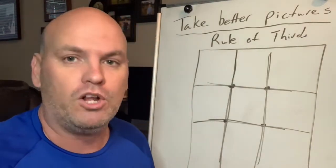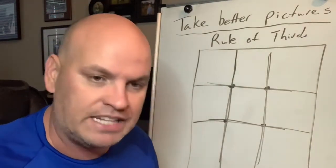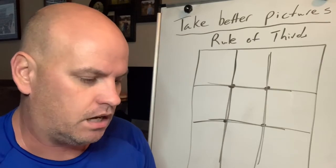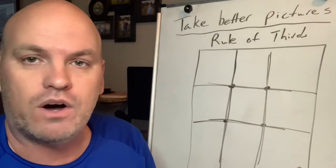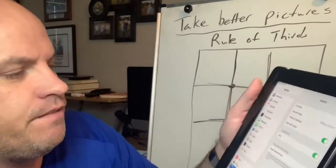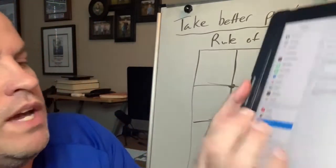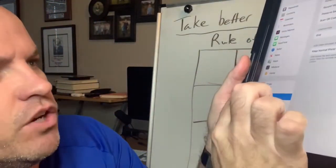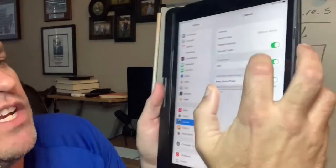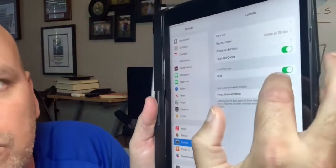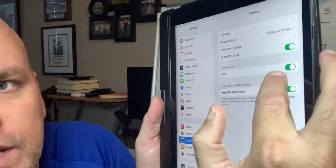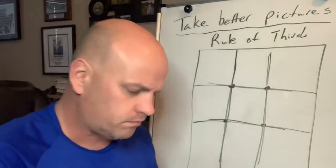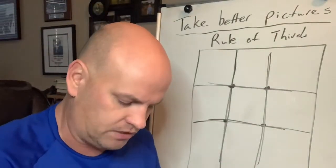Remember, pull up those grid lines. On an iPhone or an iPad, if you go to Camera and then go to Grid, that's how you turn your grid lines on and off.